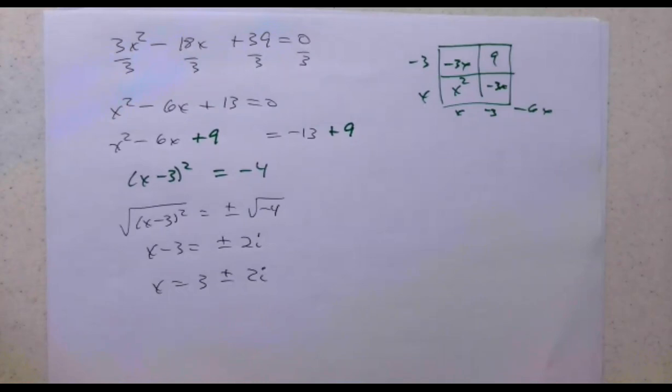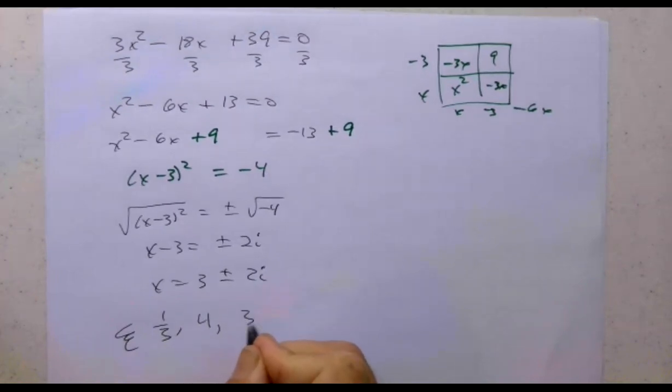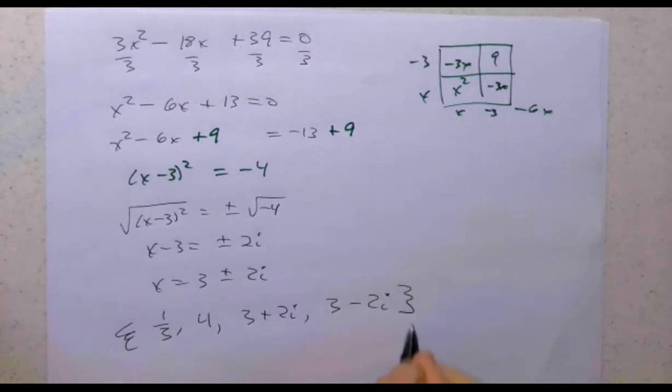So my zeros are, we had -1/3 and 4, 3 + 2i, 3 - 2i, which shows up as our zeros. Now I also asked you to write that in factored form.